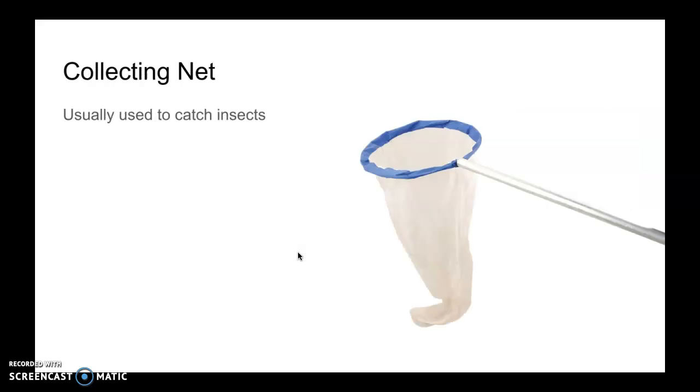Collecting nets would probably also be used for outdoor investigations. Their job is to collect or capture something. Usually insects like butterflies or dragonflies. A smaller collecting net might even be used to scoop a fish out of an aquarium.